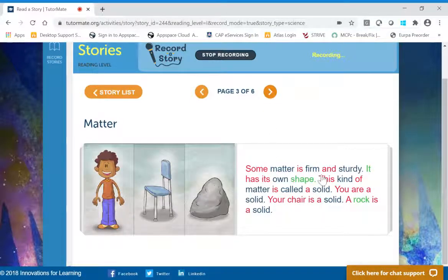Some matter is firm and sturdy. It has its own shape. This kind of matter is called a solid. You are a solid. Your chair is a solid. A rock is a solid.